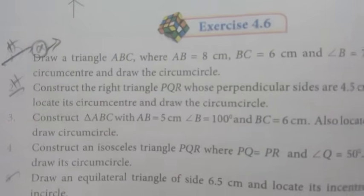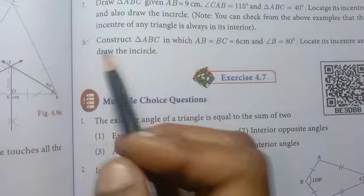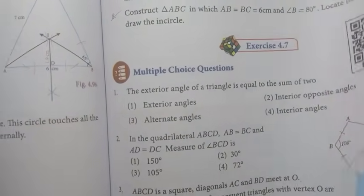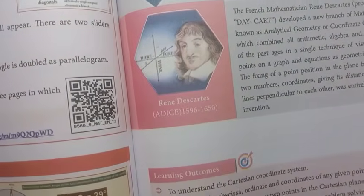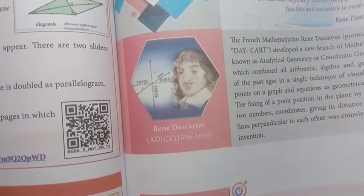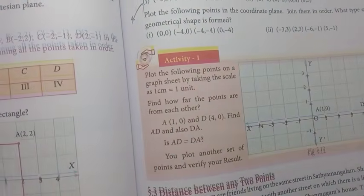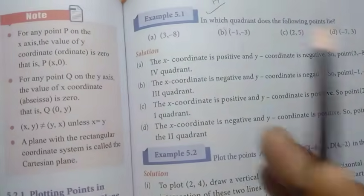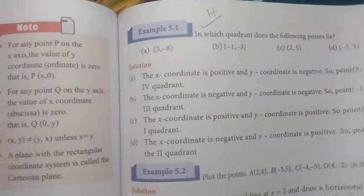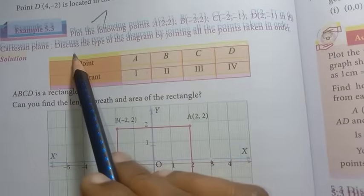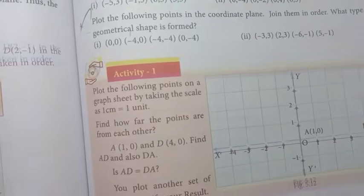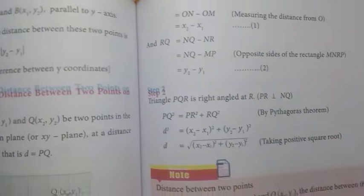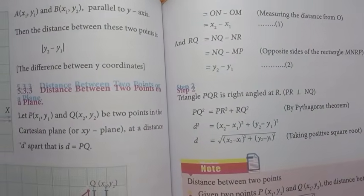Page 181: 6th and 8th important. Multiple choice questions — work out. Chapter 5: Coordinate Geometry. Page 191, Example 5.1 important, Example 5.3 important. Exercise 5.1: 3rd and 4th important questions.